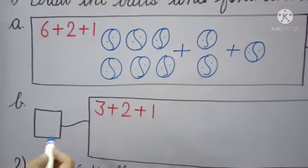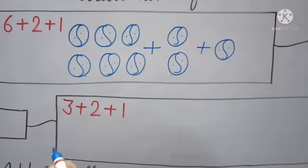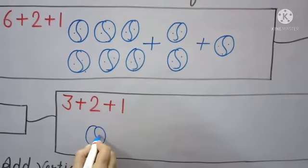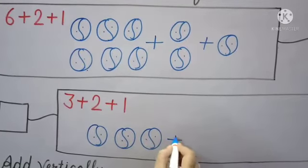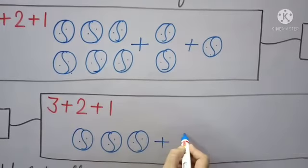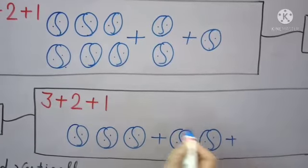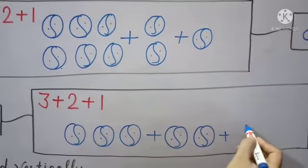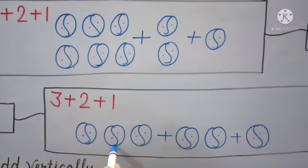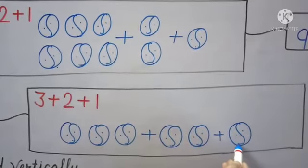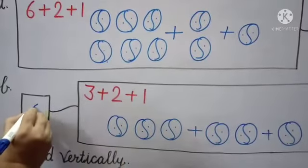Next number B: 3 plus 2 plus 1. First number is 3, so we will draw 3 balls: 1 ball, 2 balls, and 3 balls. Next number is 2, so we will draw 2 balls: 1 ball, 2 balls. Next number is 1, so here we will draw 1 ball. Now count these balls together: 1, 2, 3, 4, 5, 6. The answer is 6. 3 plus 2 plus 1 is equal to 6, so here we write the number 6.